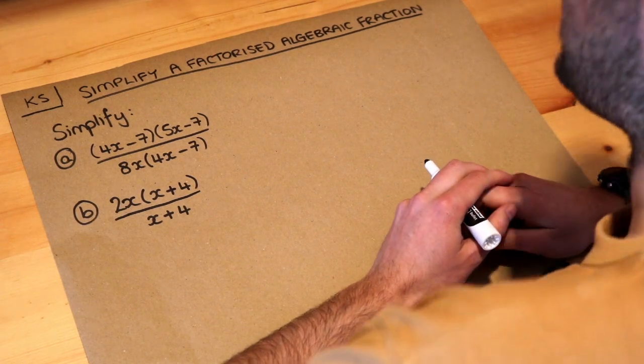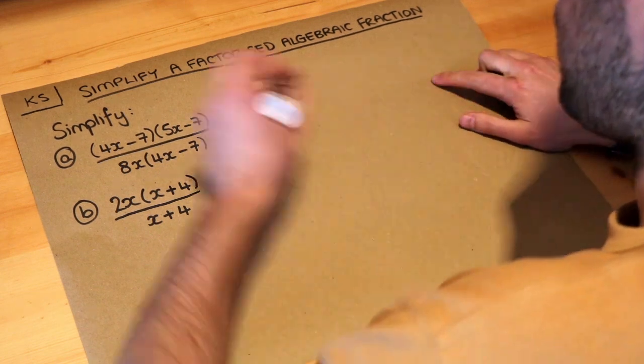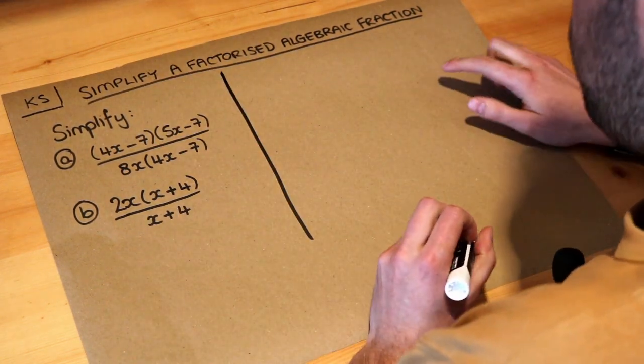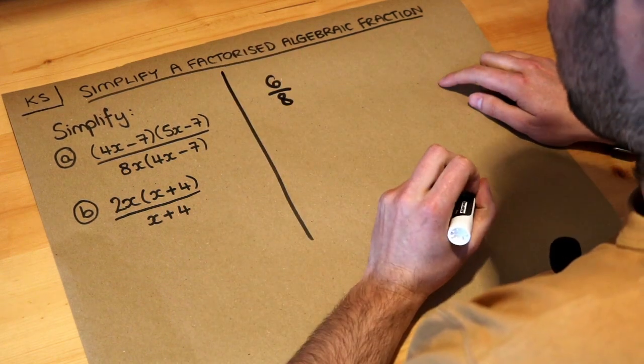Hello and welcome to this Dr. Frost Maths key skill video on simplifying a factorised algebraic fraction. Now let's think how we simplify normal fractions. If we had 6 over 8, how would we simplify that?